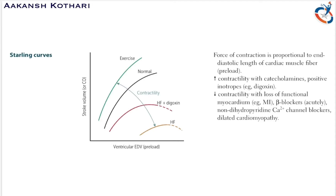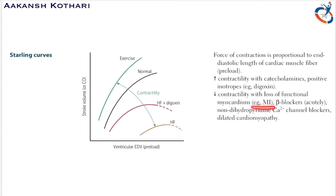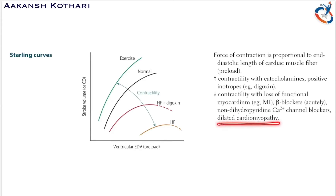The second variation is a decrease in the contractility with loss of myocardium. For example, in myocardial infarction, beta blockers used acutely, non-dihydropyridine calcium channel blockers like verapamil or diltiazem, or dilated cardiomyopathy. In heart failure or myocardial infarction, the stroke volume or contractility majorly decreases.